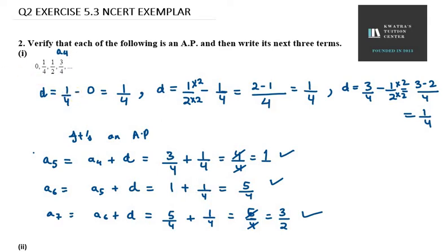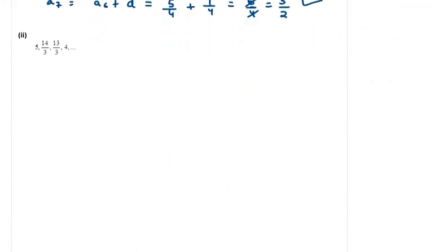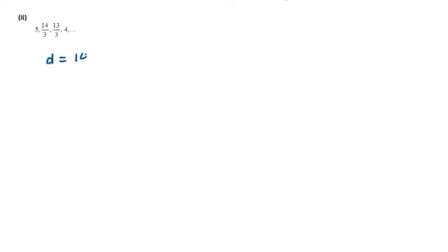Let's move on to the second part of the same portion. Question number 2 says: 5, 14/3, 13/3, 4, dash dash dash. We need to check whether it is an AP or not by taking the difference of the first two terms. It is 14/3 minus 5. Take LCM — you will get 3 here, and you need to make the second term have denominator 3 as well, so it will be 14 minus 15, giving minus 1/3.